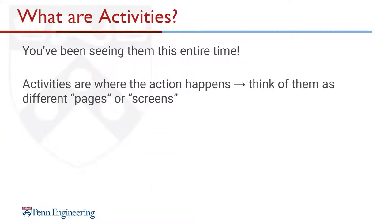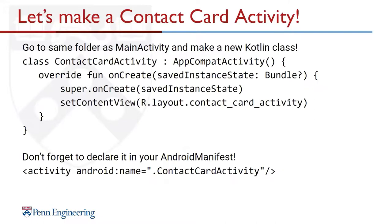Now, how do we open up the contact card? We do this by starting a new activity. You've been using activities the whole time — so far we've only used one, MainActivity. Think of activities as where the action happens: they're the different pages or screens in an app. For a complex app you'll want multiple activities, so let's make a ContactCardActivity.